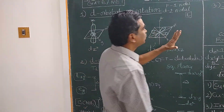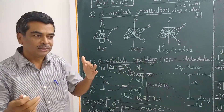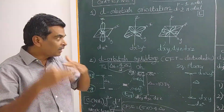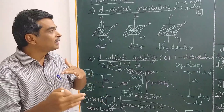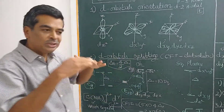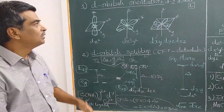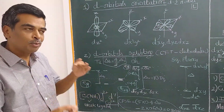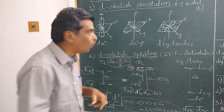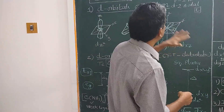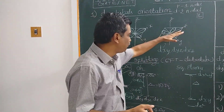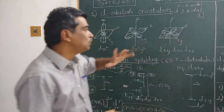The D-orbitals have two nodal planes. Nodal planes are planes where the electron density is zero. The nodal point is a point where the probability of finding the electron is zero — the probability of finding the electron in that plane is zero.